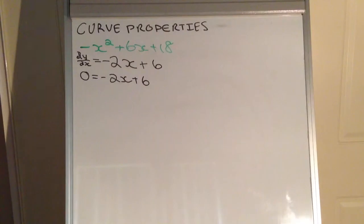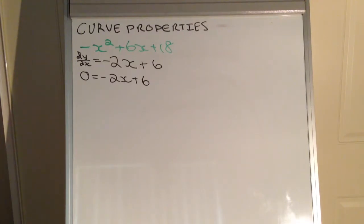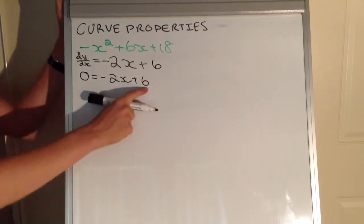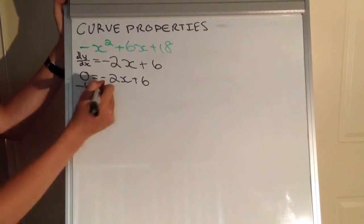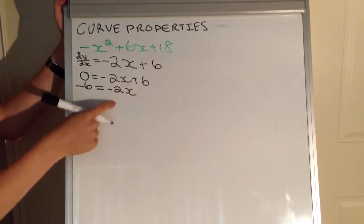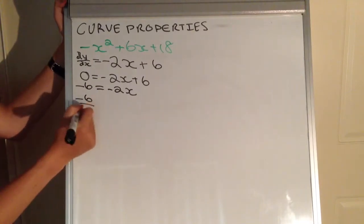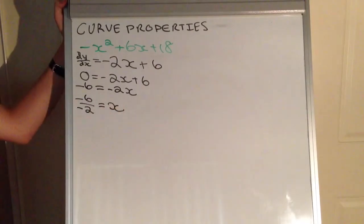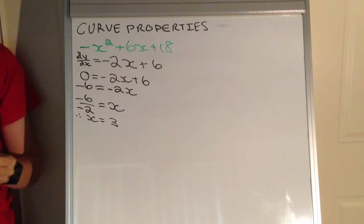Because this is a linear equation, it means there's only going to be one stationary point — one x value where our gradient, or the slope of the tangent, is equal to zero. We set 0 equals negative 2x plus 6. We bring the 6 to the other side: negative 6 equals negative 2x. Then we divide: negative 6 over negative 2 equals x, and therefore x equals positive 3, because a negative divided by a negative makes a positive — double negative rule.